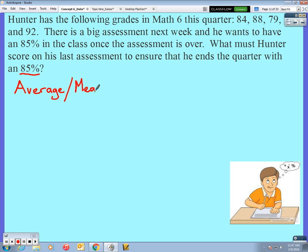Now I do know that Hunter's already taken four assessments this quarter. First one he scored an 84, plus he scored an 88, plus he scored a 79, and then he scored a 92. Let's say we just want to find the average of those four. We would take those four scores and divide them by four.